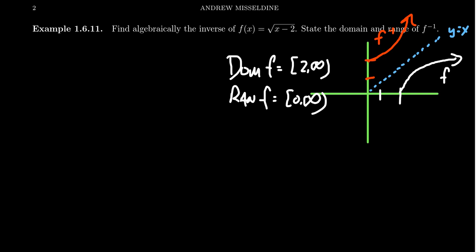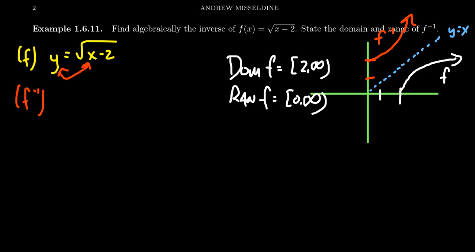Let's consider the algebraic function for f inverse. The function f is given by the relationship y equals the square root of x minus 2, where we replaced f of x with y. In order to get f inverse, we're going to switch the roles of x and y — y becomes an x and x becomes a y. Now we have to solve for y by performing the inverse operations, getting y all by itself on the right hand side of the equation.